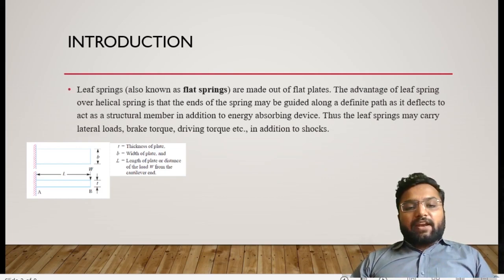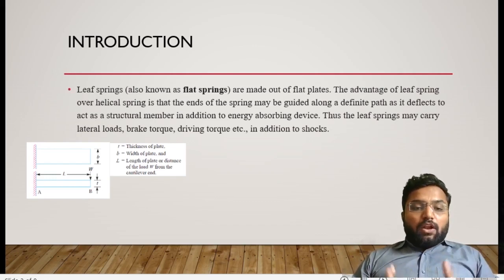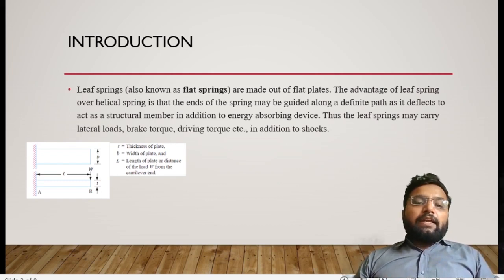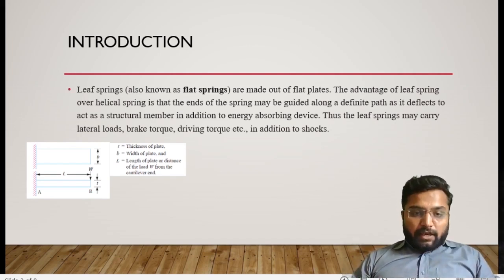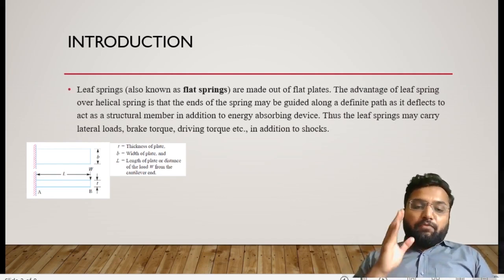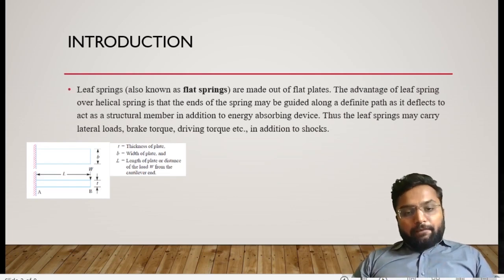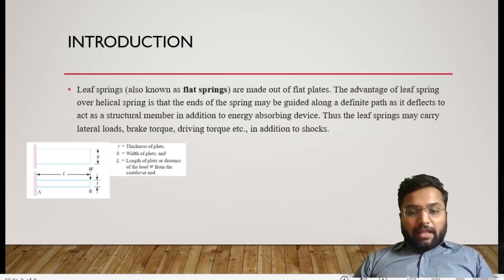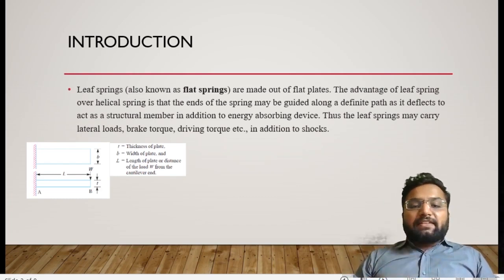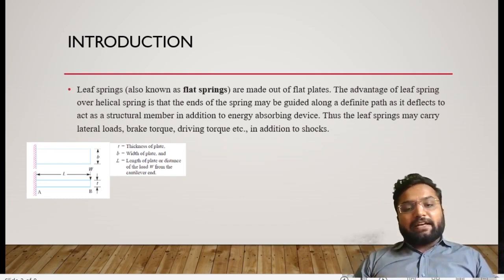Here we are considering the leaf spring as a cantilever beam. In that case, we consider the leaf spring from the center of the U-bolt joint. As mentioned in the previous session, the length under the U-bolt is considered as the ineffective length of our leaf spring. So the effective length is measured excluding that U-bolt length. I have considered this cantilever beam from the center of the U-bolt, and by subtracting the length of the U-bolt. So this half length is L, and the full length is 2L.